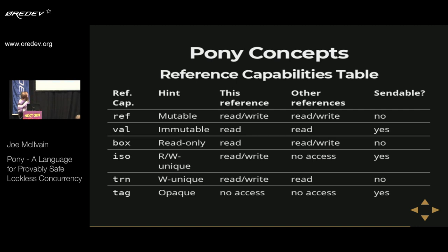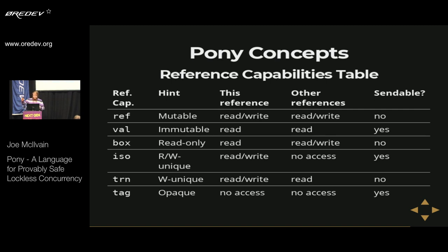Tag is an opaque reference. It allows neither reading nor writing any of the underlying object's fields. Tag is actually the capability used to refer to other actors in Pony — which makes sense because you shouldn't be able to read or write an actor's fields from outside the actor. The tag reference does have the address or identity of the object, so you can still use it for identity comparisons and to send asynchronous messages to other actors. It's an address without any access.